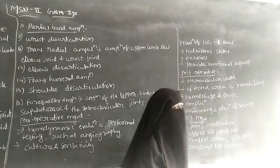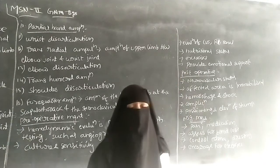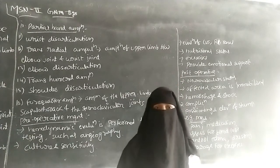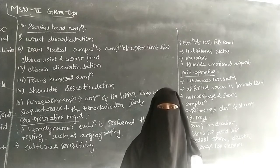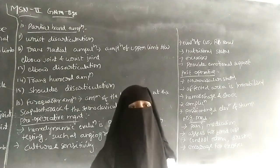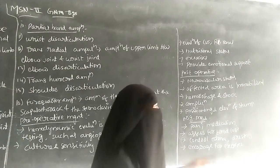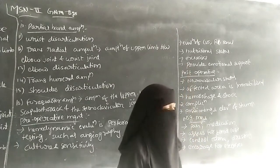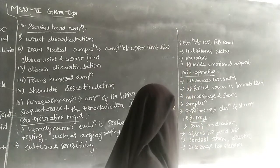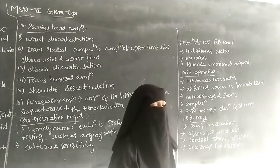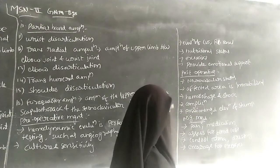The nurse should also provide emotional support. Because of the amputation and the loss of the limb, the patient may become depressed. So emotional support must be provided to the patient.